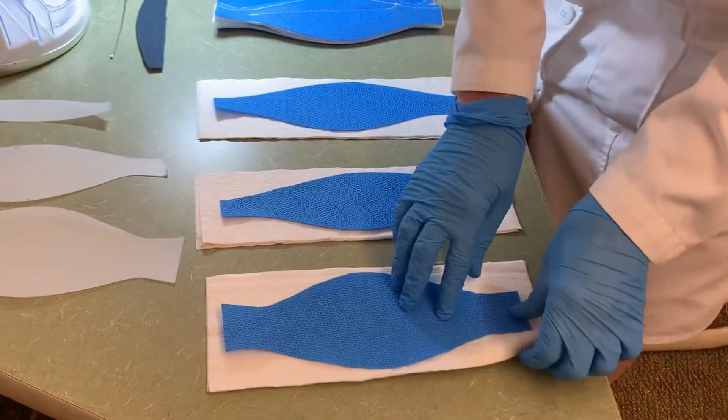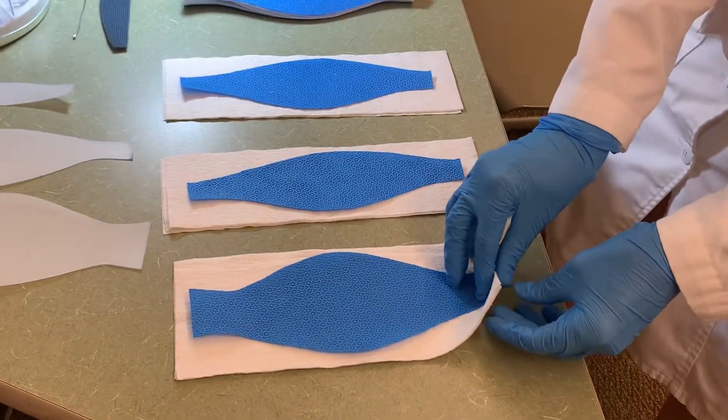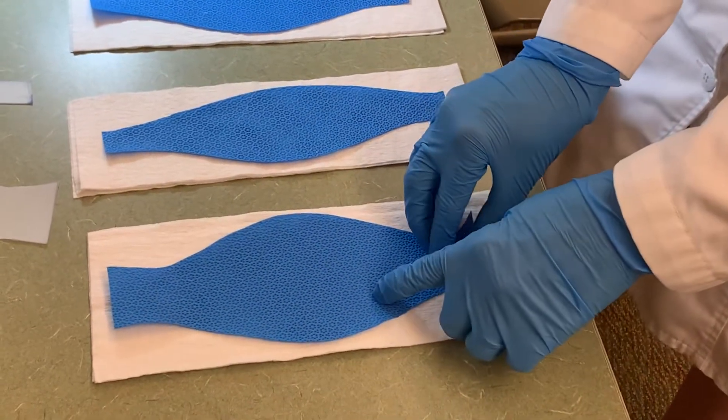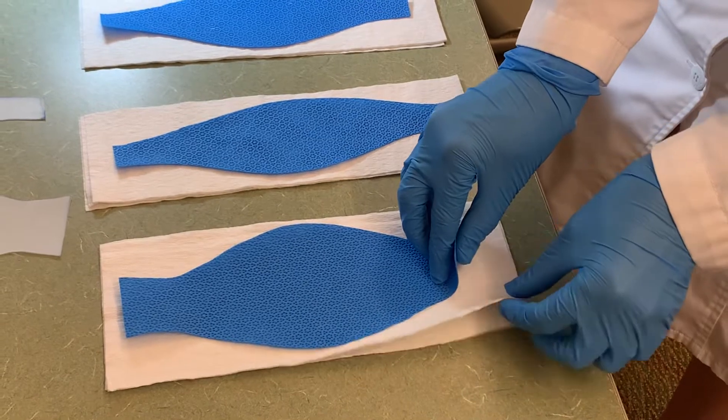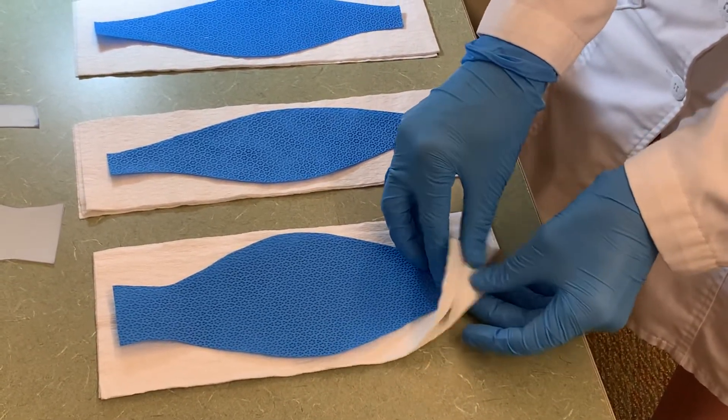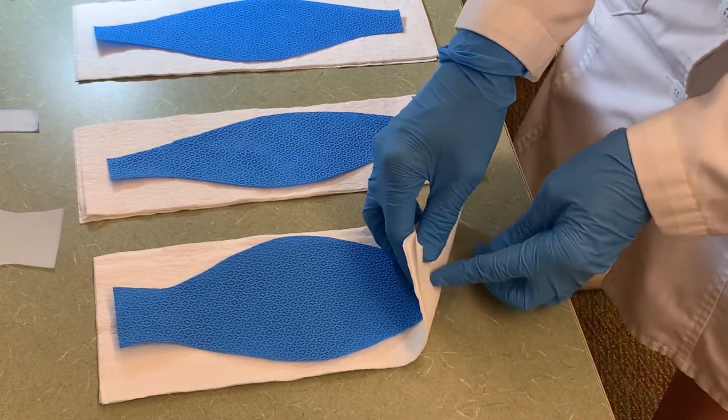Now each section has four layers total. There's the top layer which is a layer that has a liquid barrier. Then we have two layers for filter and then an inside layer that is against the face.